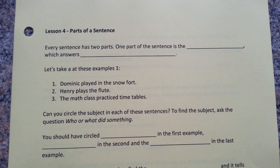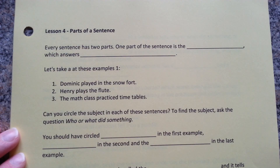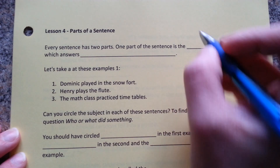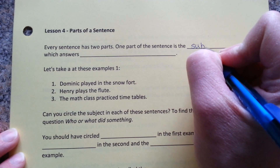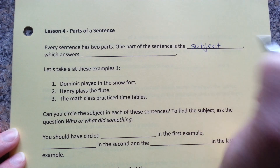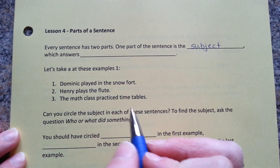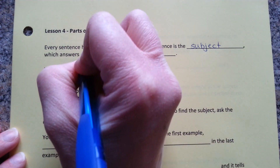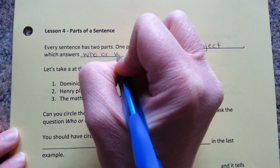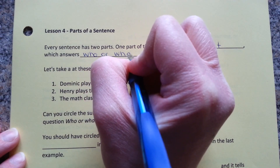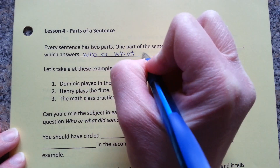Lesson 4: Parts of a sentence. Every sentence has two parts. One part of the sentence is the subject, which answers who or what did something.